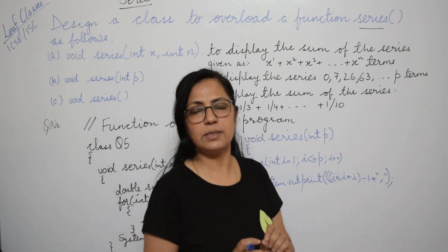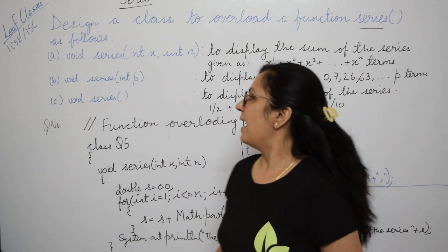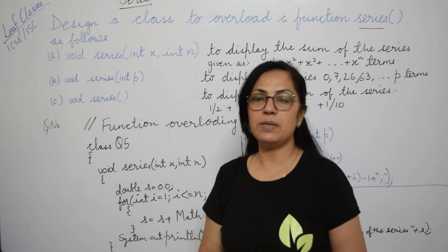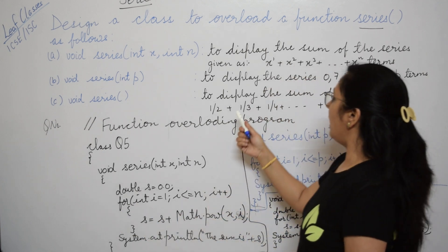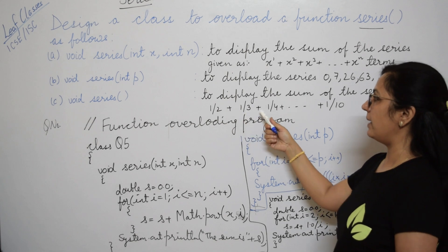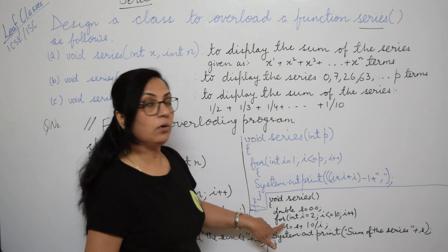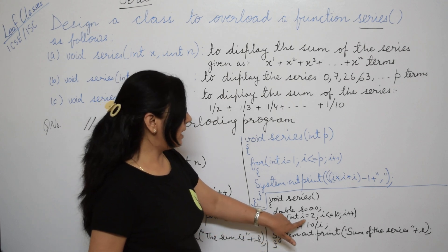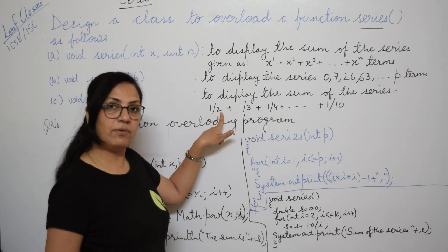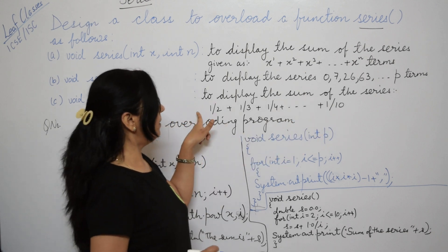You get very simple programs if the logic is clear. Now the third function: void series and empty brackets are there, meaning this function is not receiving any value. The question says this function is to display the sum of the series 1/2 plus 1/3 plus 1/4. Here I have written double s equals 0.0. Then for int i equals 2, i less than equals to 10 - why 2? Because the first term has denominator 2 and the last term has denominator 10.